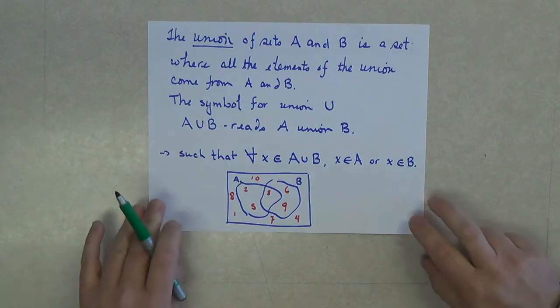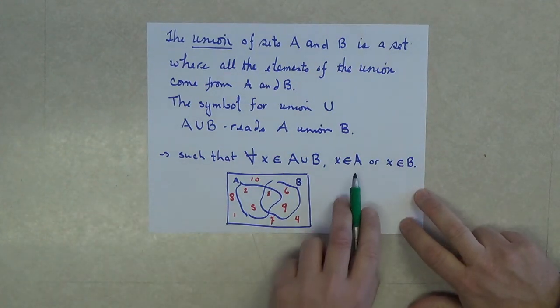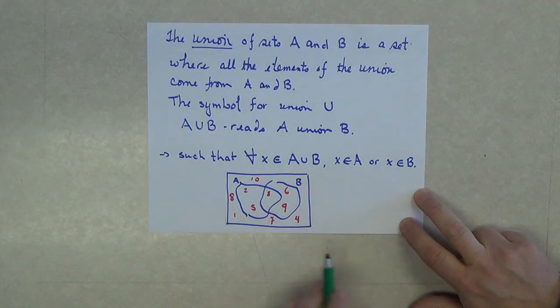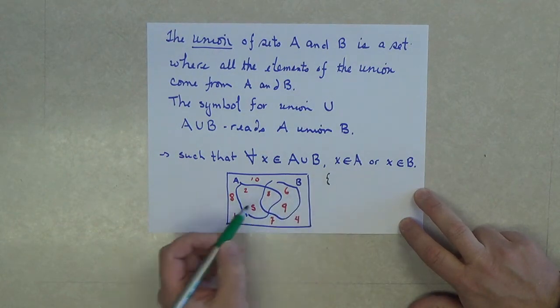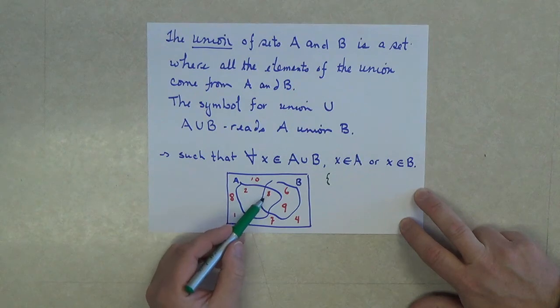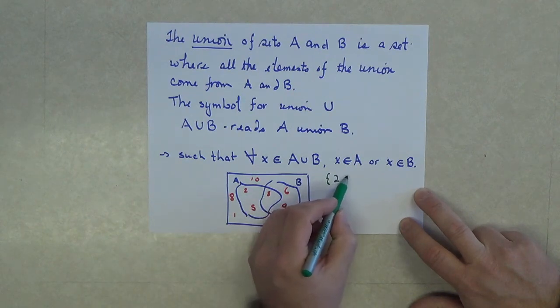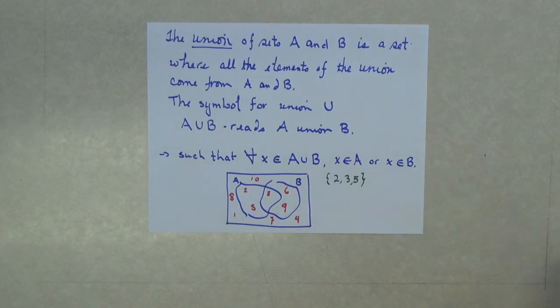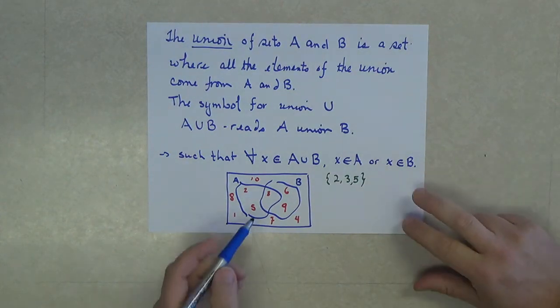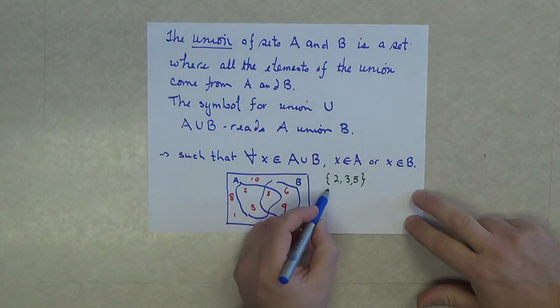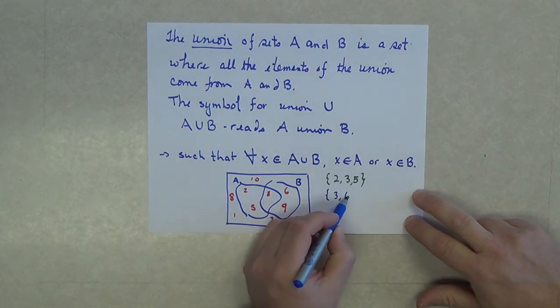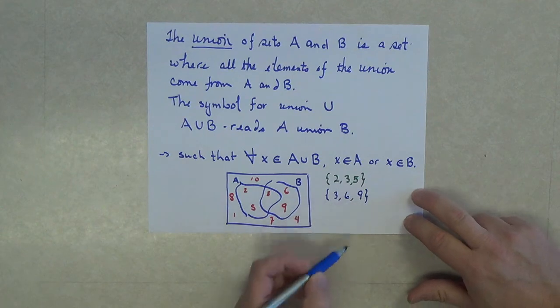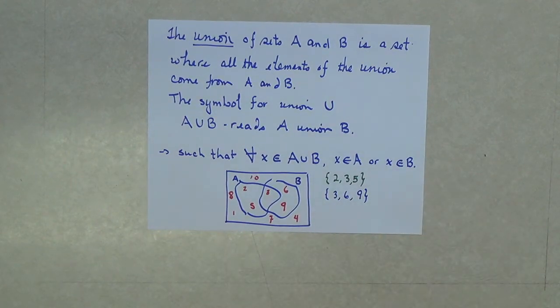What would we find? If we were to list the elements of A, we would find the elements of A are 2, 3, and 5. If we listed the elements in set B, the elements of set B are 3, 6, and 9.